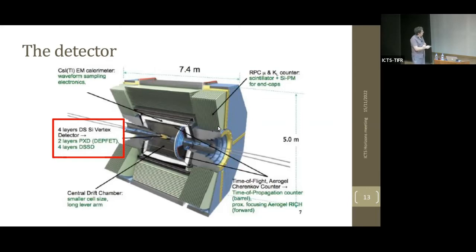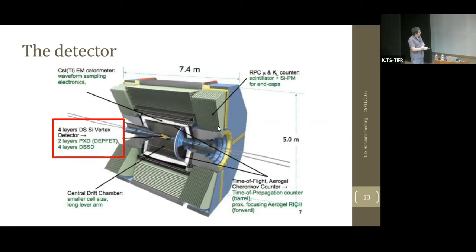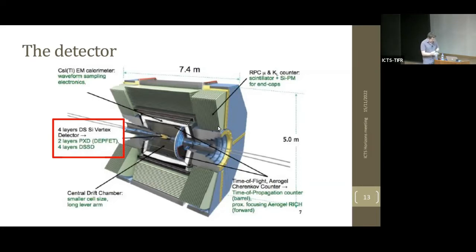The detector has an asymmetric beam configuration — 8 GeV electrons and 3 GeV positrons — creating a boost so B mesons fly some distance before decaying, enabling time-dependent measurements. We have: a six-layer vertex detector with two pixel layers and four double-sided silicon layers; a low-mass drift chamber for momentum measurements; a CsI(Tl) electromagnetic calorimeter inside the solenoid; an instrumented iron flux return for muon and K_L detection; and aerogel Cherenkov counters for PID in the forward region.